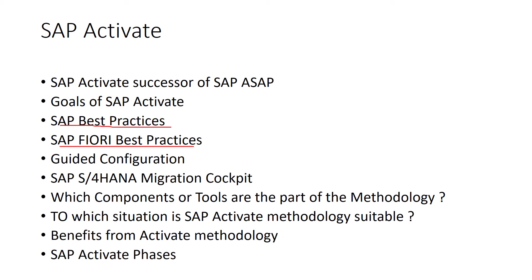For the US it is GAAP, for Germany it is HGB (German Commercial Code). In the FI area, SAP Best Practices are available for the following business processes: accounting and financial closings, asset accounting, accounts payable, accounts receivable, internal orders, profitability and cost analysis, and period-end closing. These are examples of best practices used in the FI area. Integral parts of SAP Best Practices are test scripts — previously called Business Process Documents (BPDs) — and process diagrams.